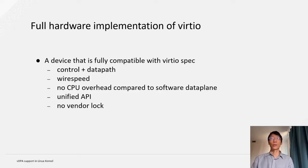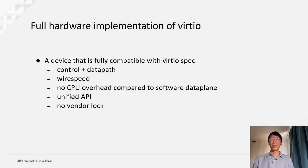In order to address all the limitations found in the software virtio implementations, some hardware vendors start to implement a hardware implementation for virtio, which means the device is fully compatible in both control paths and data paths with the virtio specification. Then it could reach wire speed, and there will be no CPU overhead since all the data plane has been offloaded to the hardware. The unified API was preserved, and there will be no vendor lock.